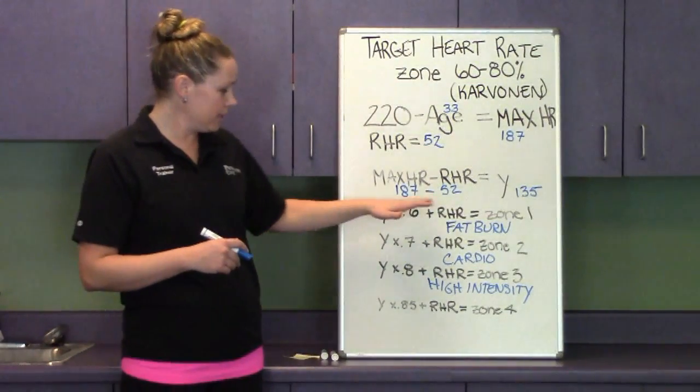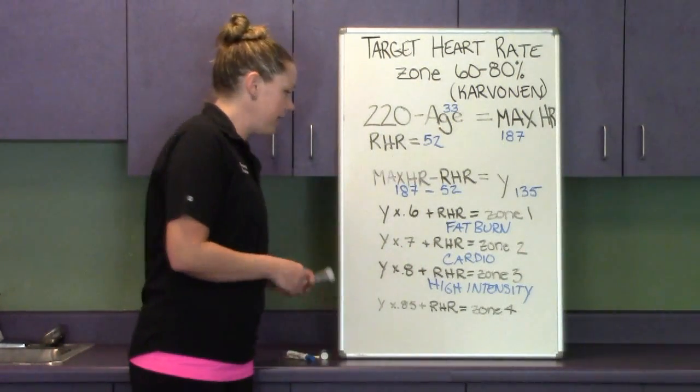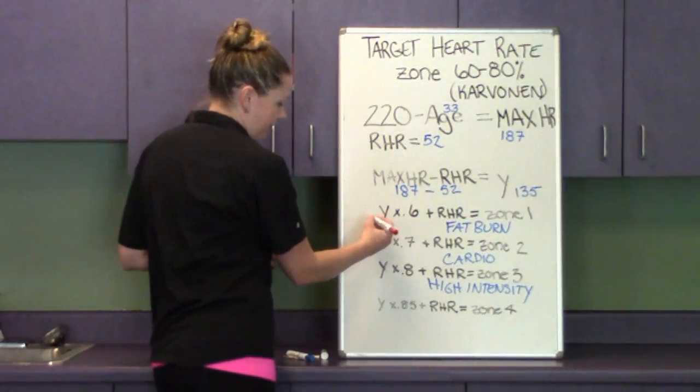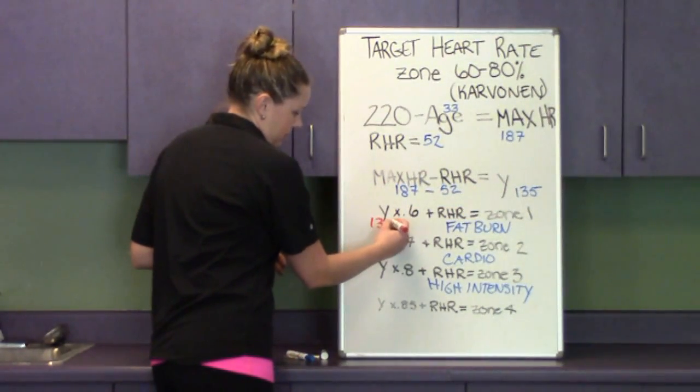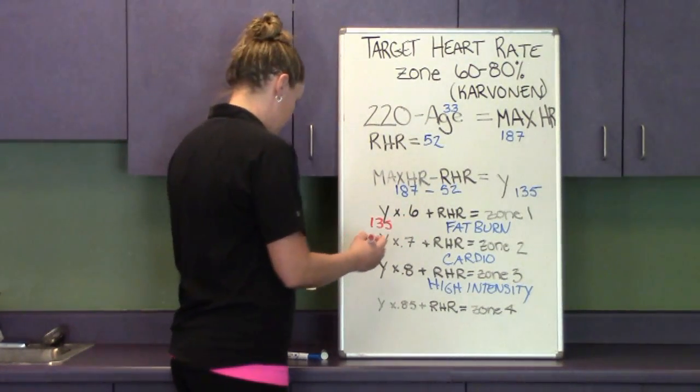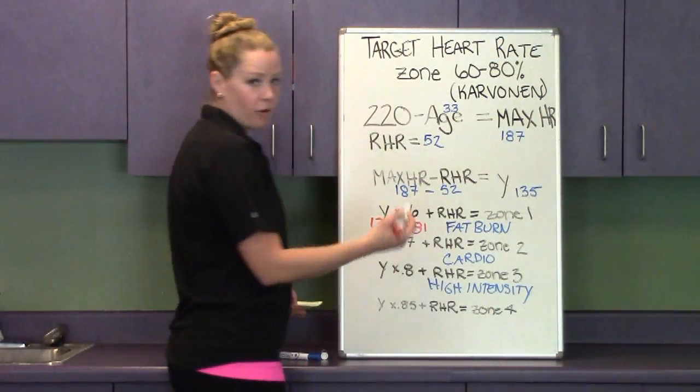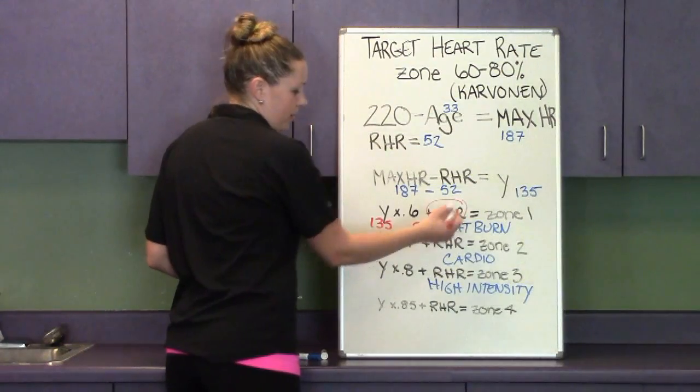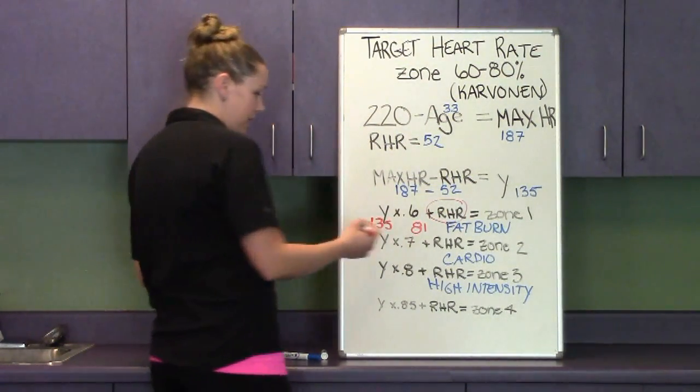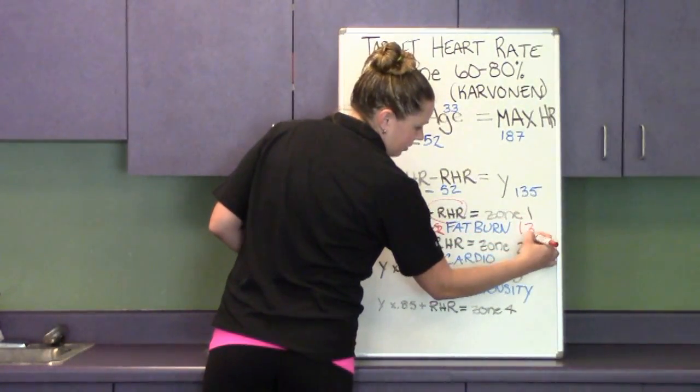Okay, so now we're going to figure out those zones based on me. So if I take Y, which we figured out before, it's 135 for me, times 0.6, I'm going to get 81. In the formula, you're then going to add back in your resting heart rate, and this is what makes it more specific for the fitness level that you're at right now. So if I add back in 52, I get 133.